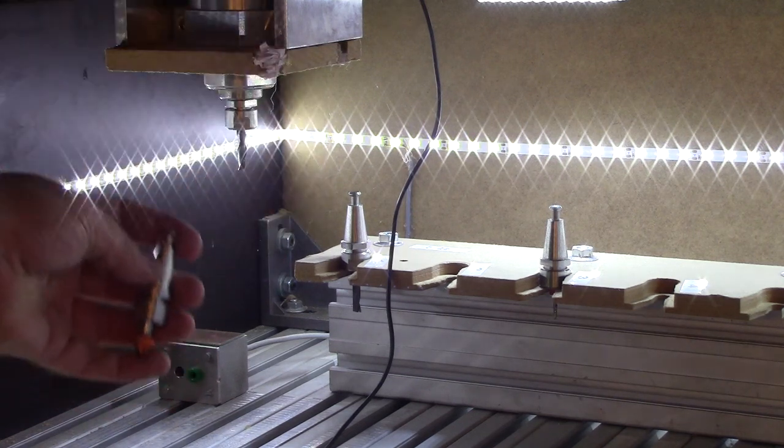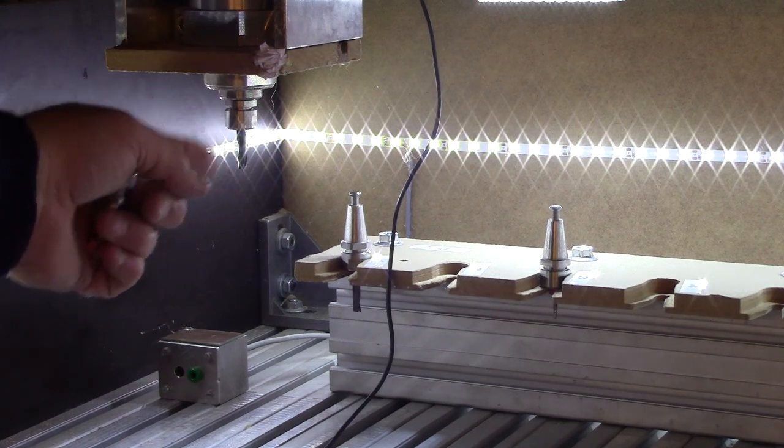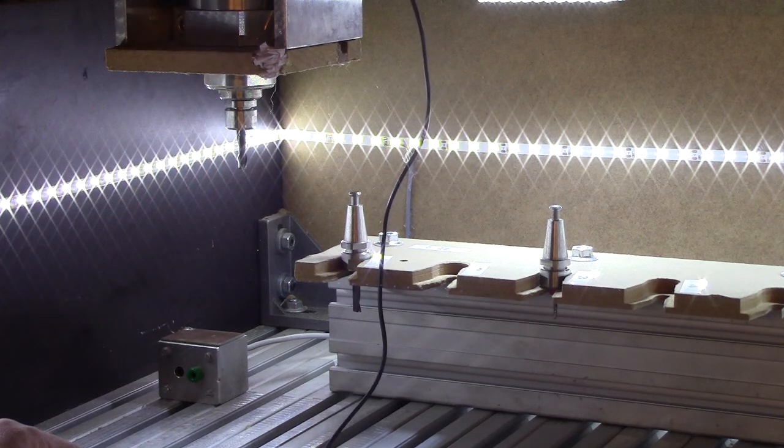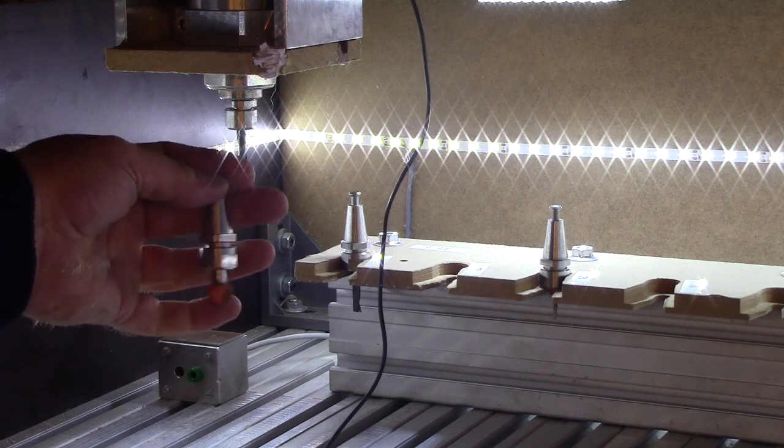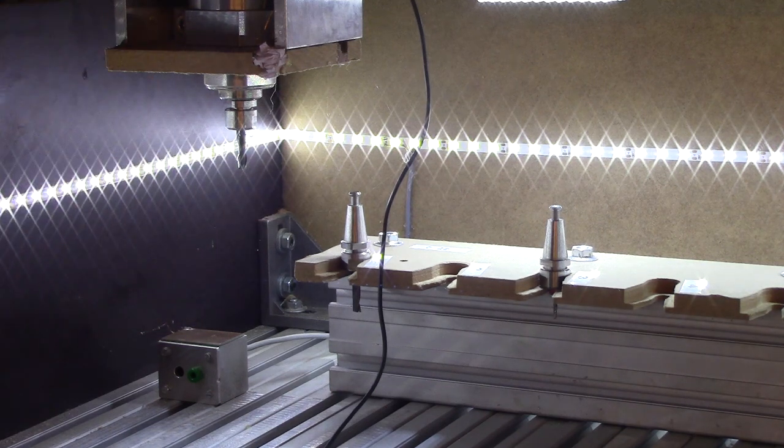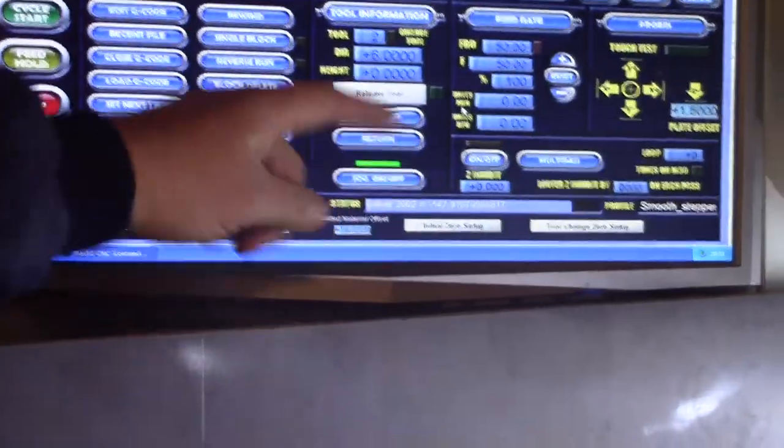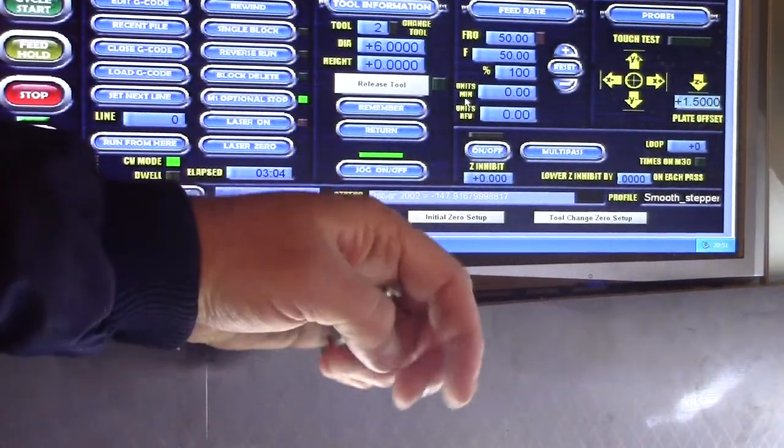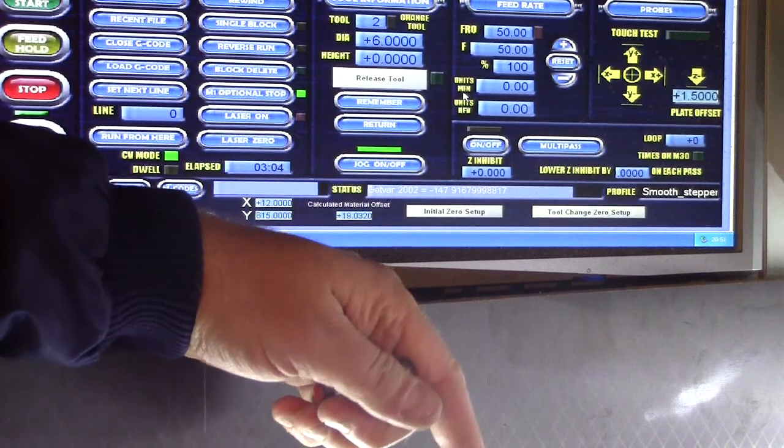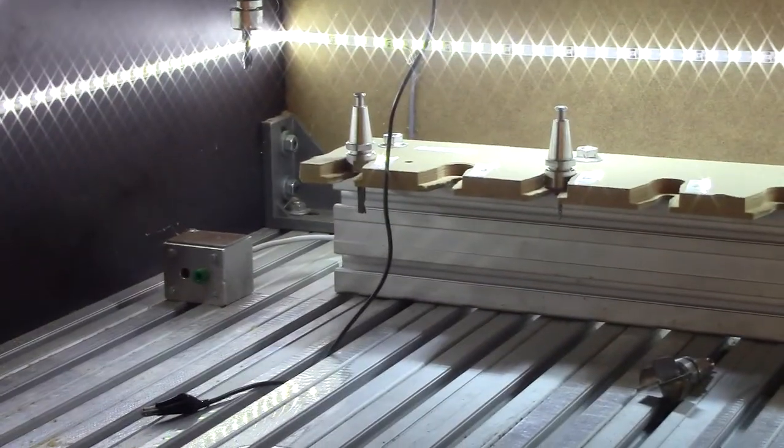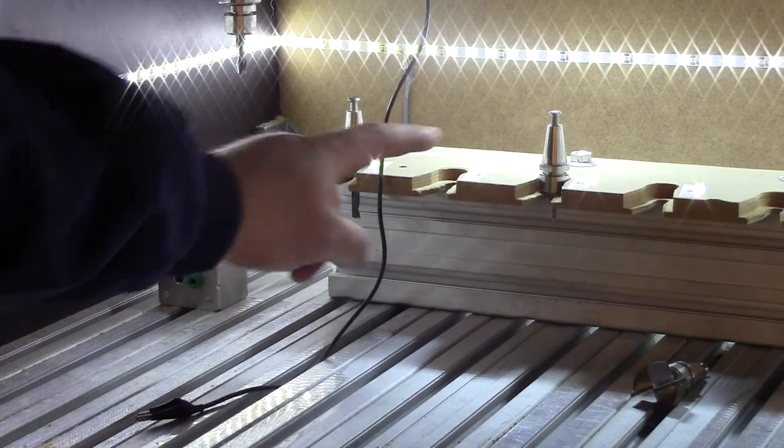So what is going to happen now is that I want to start the probing routine, and what it will do is that it will prompt me at the screen up here, and say how many tools I want to probe, and in this sequence I want to probe tools number one, two, and three.